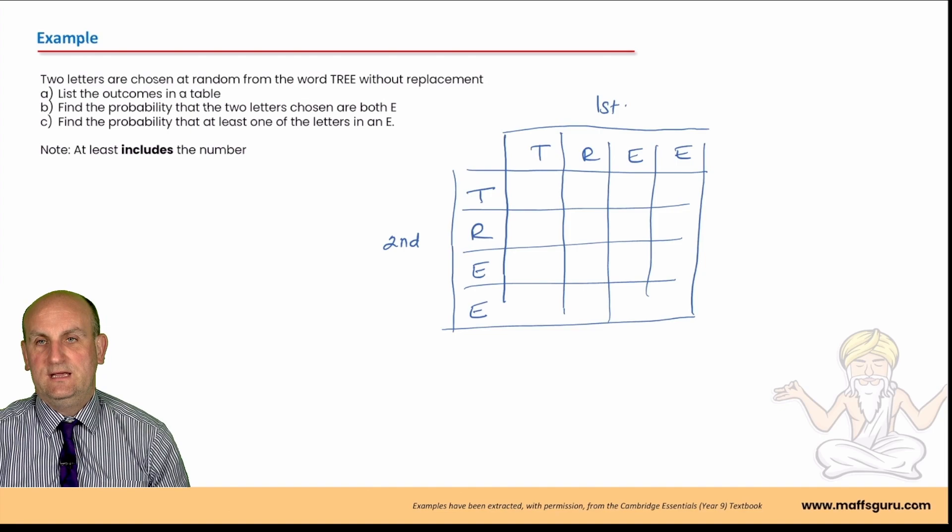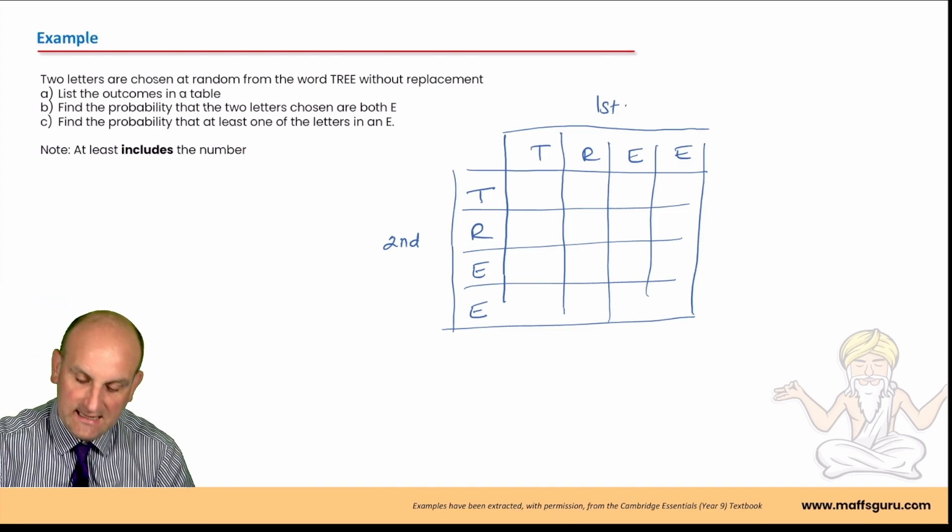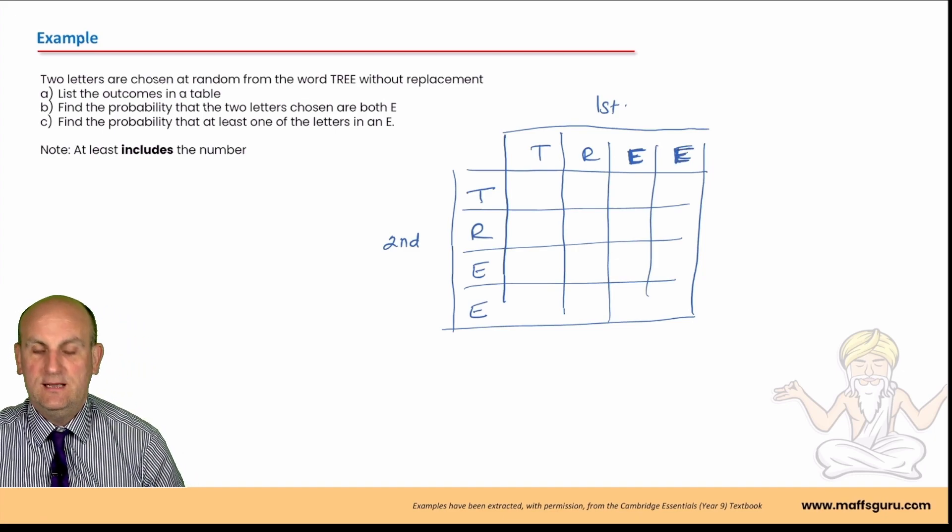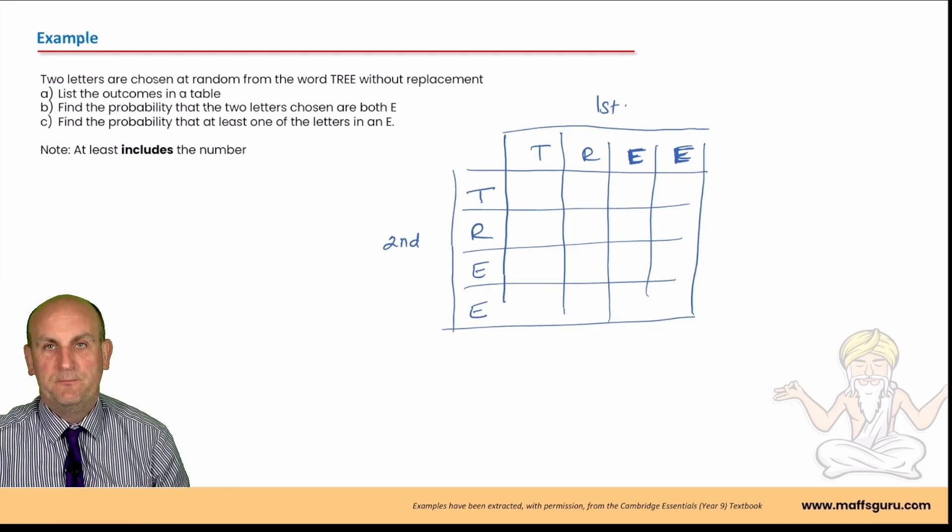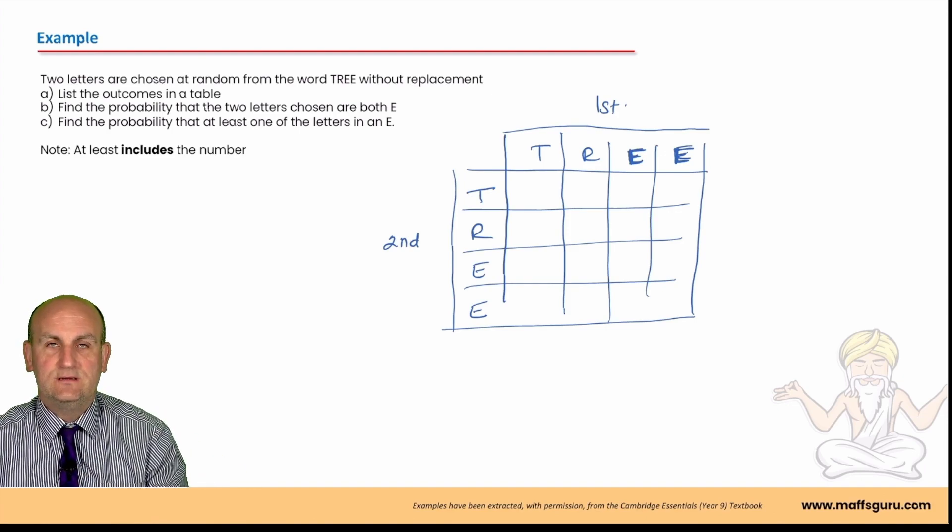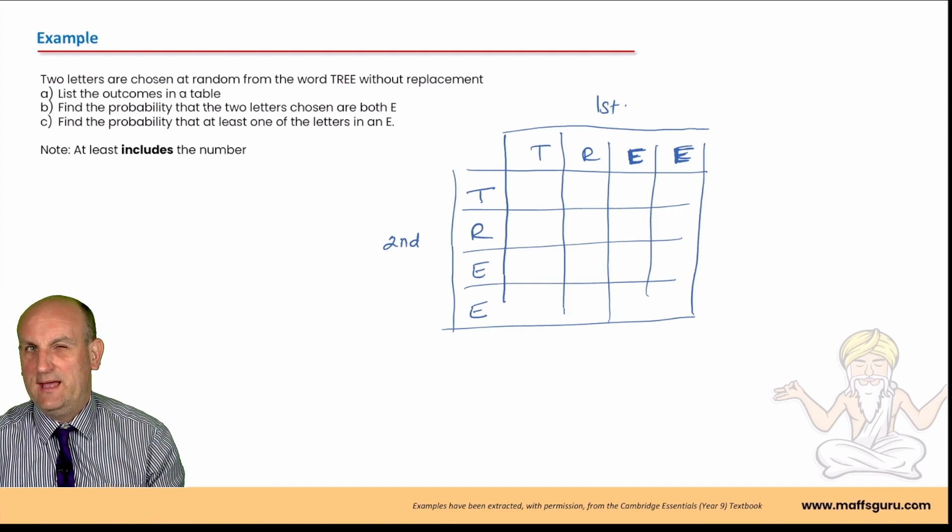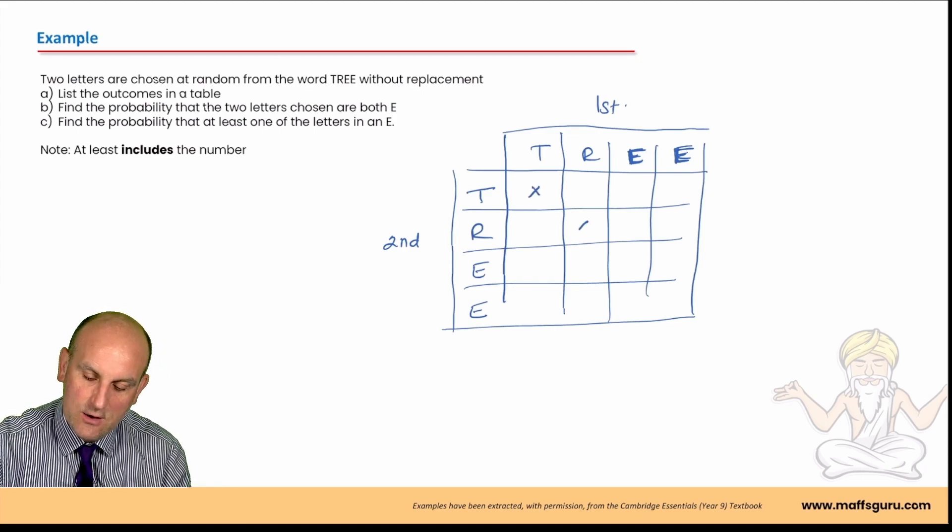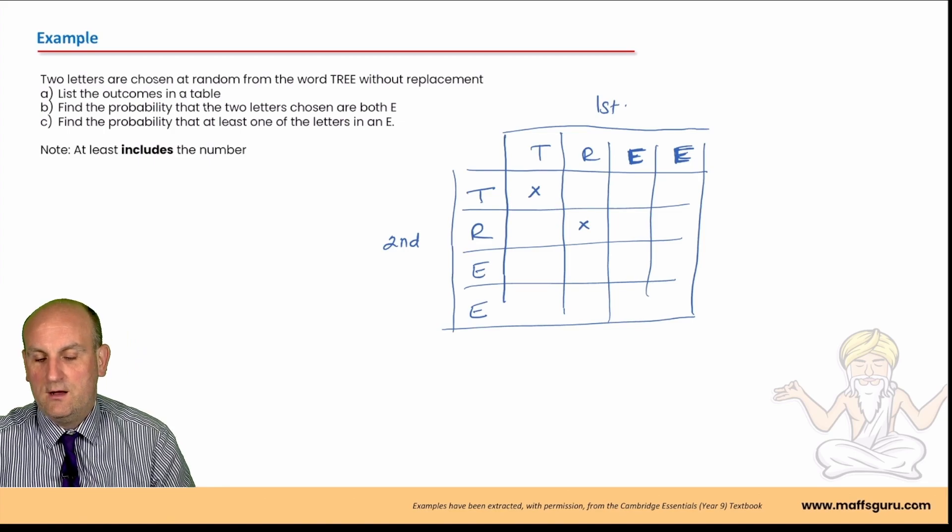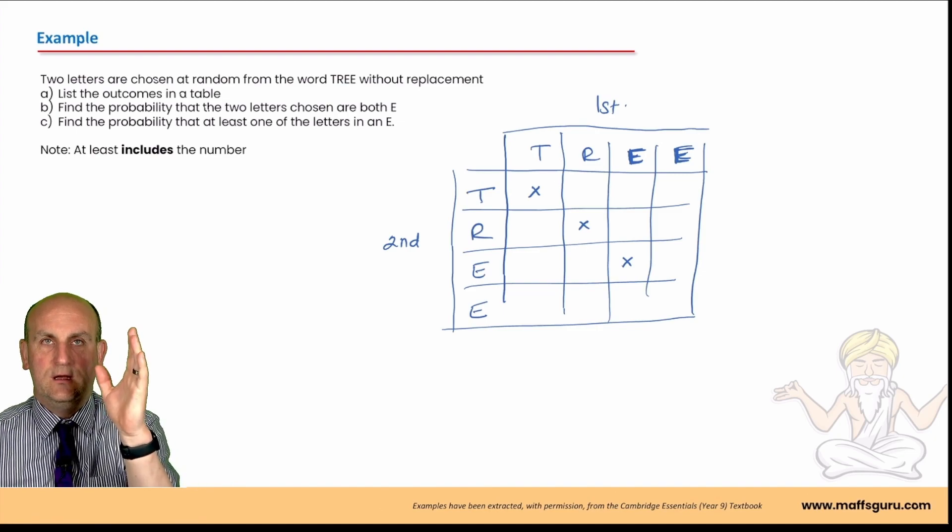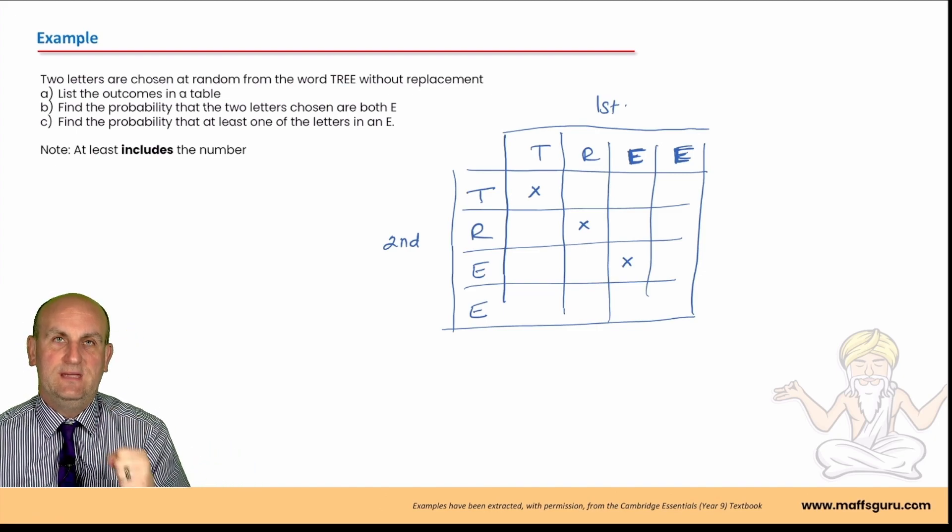Now, what is going to be important here is to notice that this E, the first E in the word TREE is different from the second E in TREE. So, I'm going to explain what that means in just a moment. But, what do you now remember? Without replacement, I take the T out. Is there going to be a T back in the bag to choose? Nope. So, it's not going to be possible to have TT. It's not going to be possible to have RR. And, it is not going to be possible to have that one there.